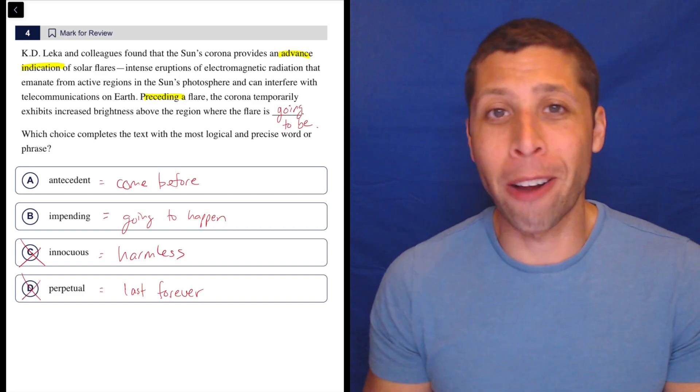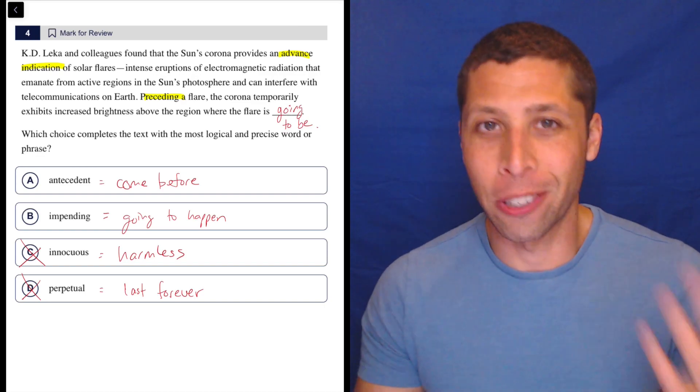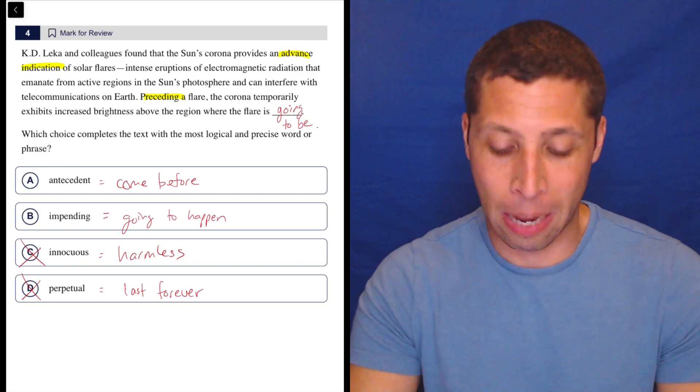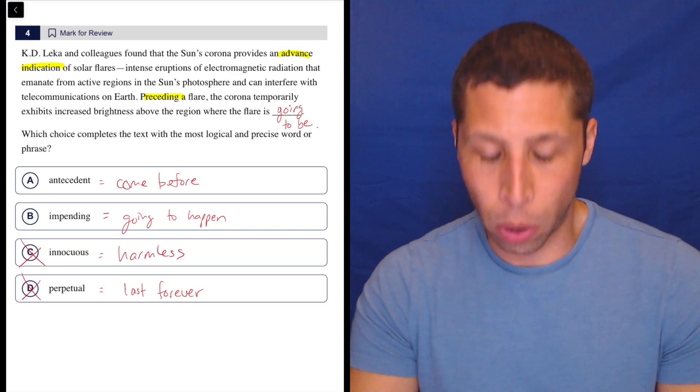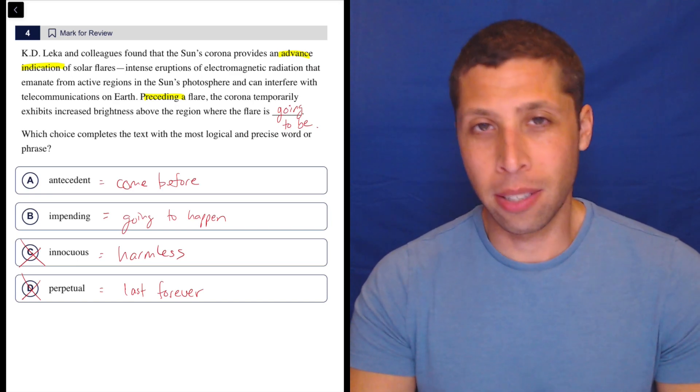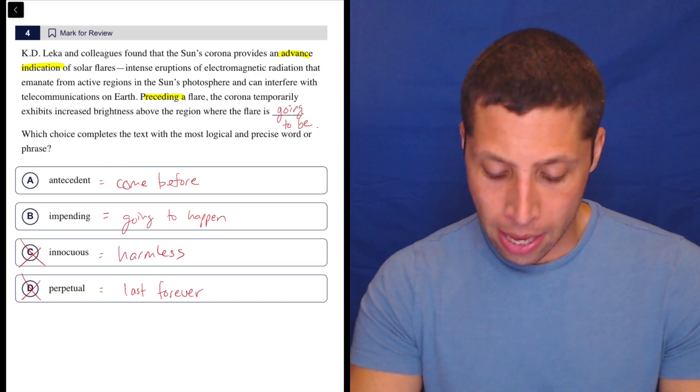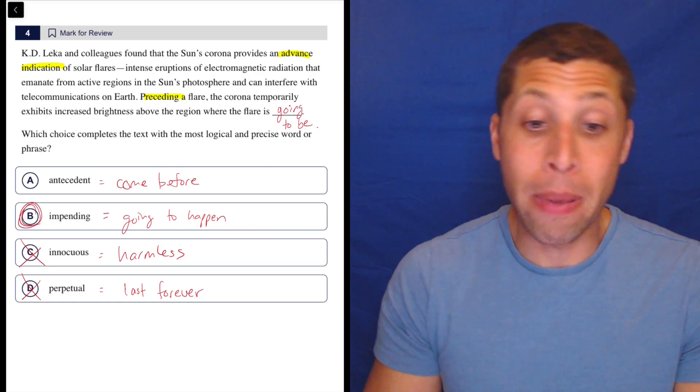So some of these words you will encounter in like random places in school. This is why you should pay attention in any class. You never know what's going to come up. But here we do have this issue of maybe the usage of words. Both of these do seem to be related to the topic. The actual answer is B, impending.